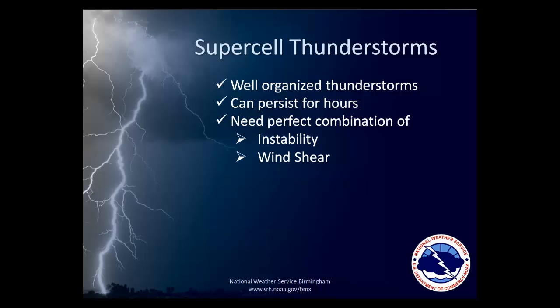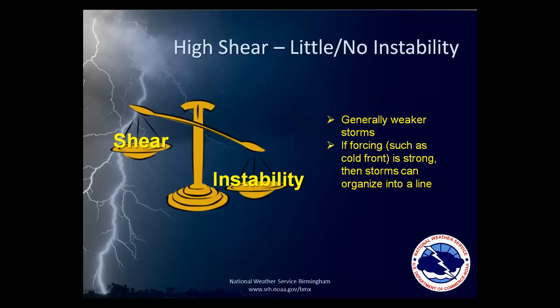Wind shear is simply winds blowing at different speed or direction at different heights. When there is little instability, thunderstorms sometimes have a hard time growing in the first place, and if they do form, they usually start out relatively weak, but they can grow stronger and organize into a line if the wind shear is high and other conditions are conducive for thunderstorm growth.